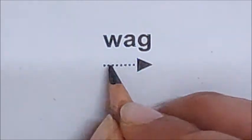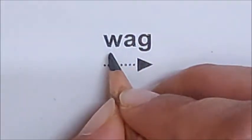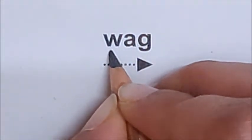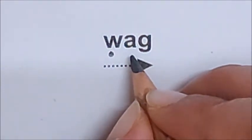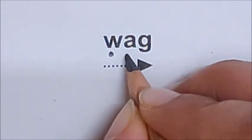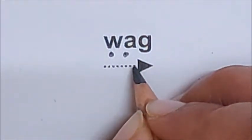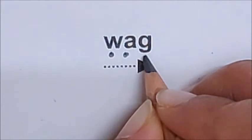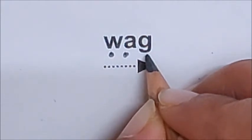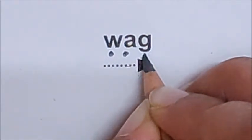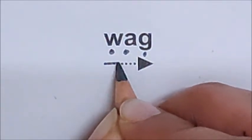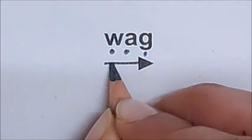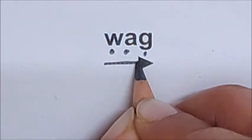Now let us read the next word. What is the first sound here, children? W. So put one dot for W. What is the next sound? A. So put one dot for A. What is the last sound? G. So one dot for G. Now join and read. W - A - G. Wag.